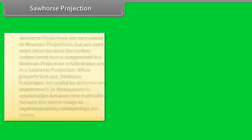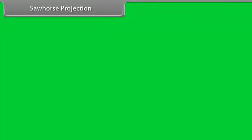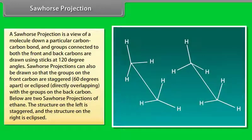Sawhorse projection: Sawhorse projections are very similar to Newman projections but are used more often because the carbon-carbon bond that is compressed in a Newman projection is fully drawn out in a sawhorse projection. When properly laid out, sawhorse projections are useful for determining enantiomeric and diastereomeric relationships between two molecules because the mirror image or superimposability relationships are clearer. Like with the Newman projections, a sawhorse projection is a view of a molecule down a particular carbon-carbon bond, and groups connected to both the front and back carbons are drawn using sticks at 120 degree angles. Sawhorse projections can also be drawn so that the groups on the front carbon are staggered 60 degrees apart or eclipsed, directly overlapping with the groups on the back carbon. Below are two sawhorse projections of ethane. The structure on the left is staggered and the structure on the right is eclipsed. These are the simplest sawhorse projections because they have only two carbons and all of the groups on the front and back carbons are identical.